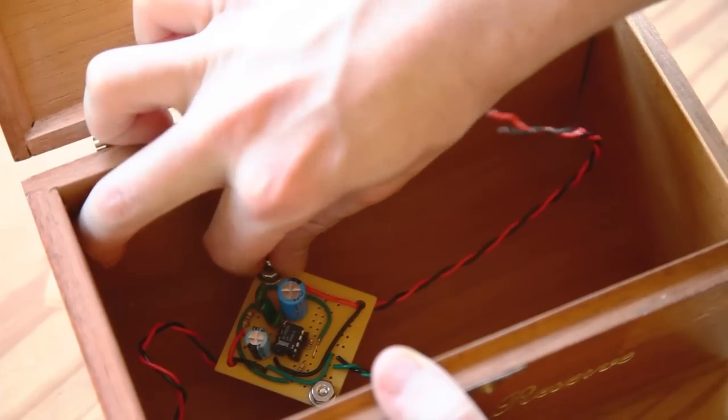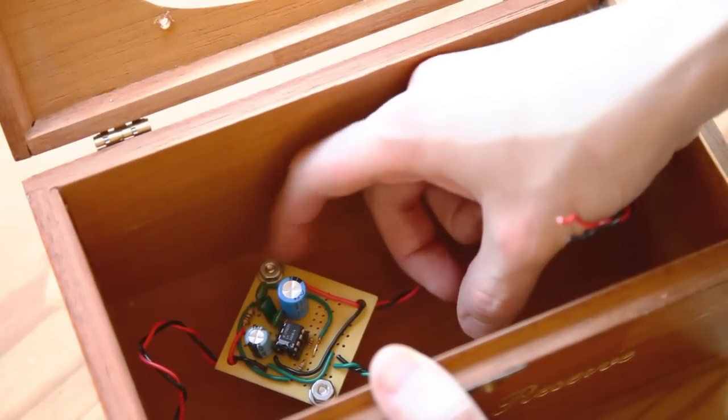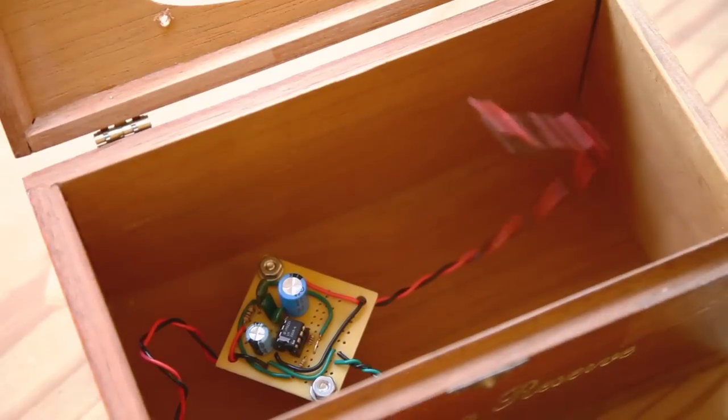To mount the circuit board, pass the screws through from the outside and slip on the plastic standoffs inside. Slide the circuit board onto the screws and install the nuts.